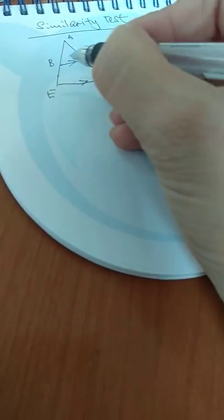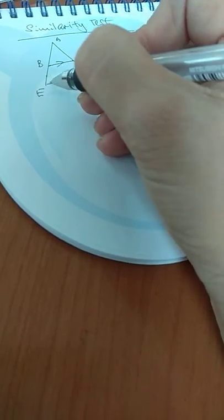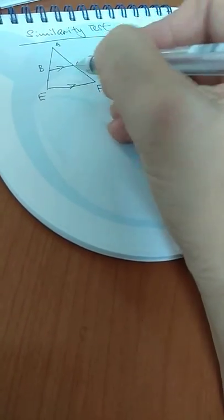If there's a parallel line here, it means that this angle and this angle are the same. So therefore, this is similar to this.